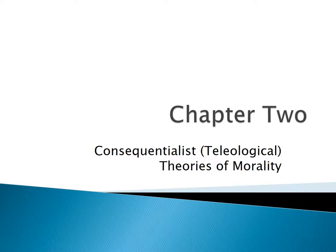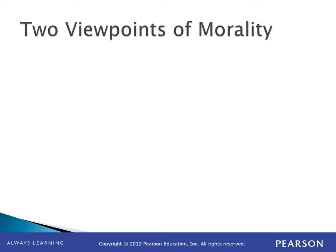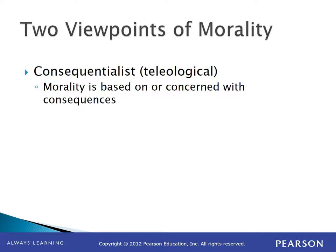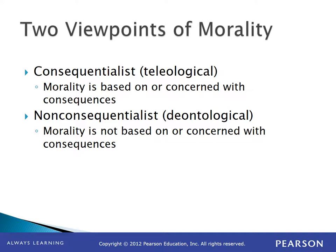Chapter 2: Consequentialist or Teleological Theories of Morality. Ethicists consider a number of different moral or ethical theories, and they have divided them into two categories. The first is the consequentialist or teleological category. Consequentialists believe morality is based on consequences — the result determines whether an act is moral or immoral. The other category is non-consequentialism, the ontological approaches to ethics, which we'll discuss in Chapter 3.